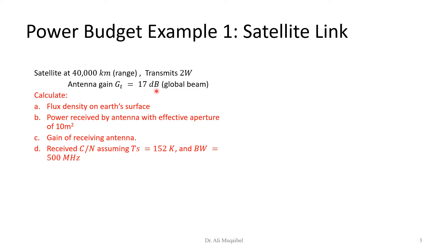We want to find the flux density on the earth's surface. Remember that the flux density equals the EIRP or the transmitted power times antenna gain, and then we divide by the impact of path loss.